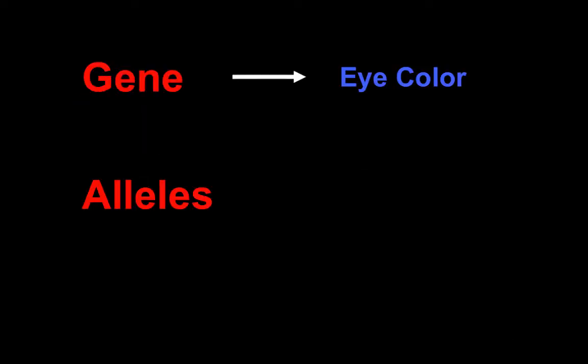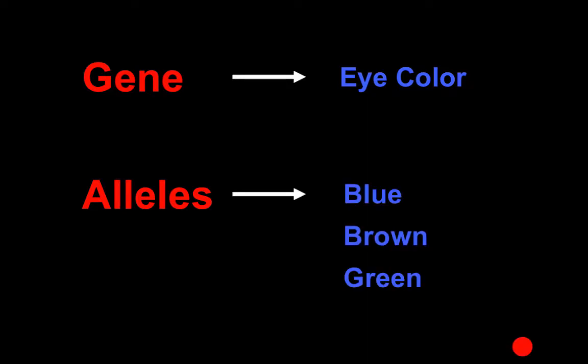Another example would be eye color. Within the eye color gene, which everyone has, different people have different alleles or versions — for example, blue, brown, or green.